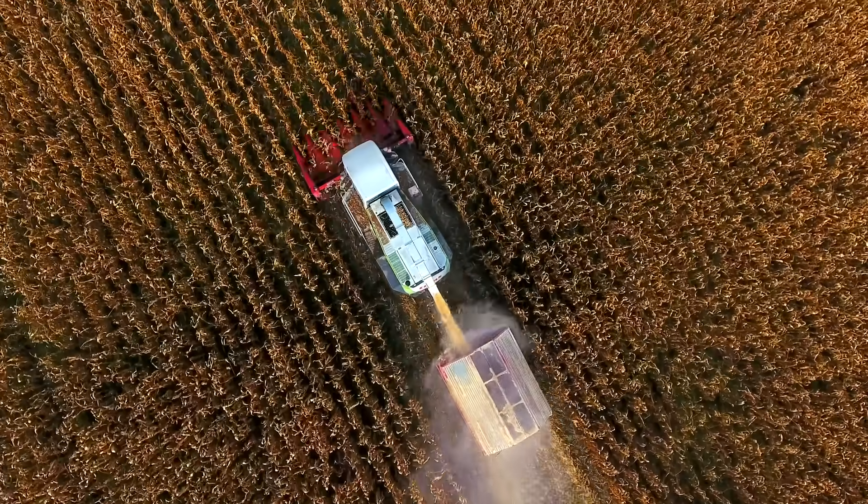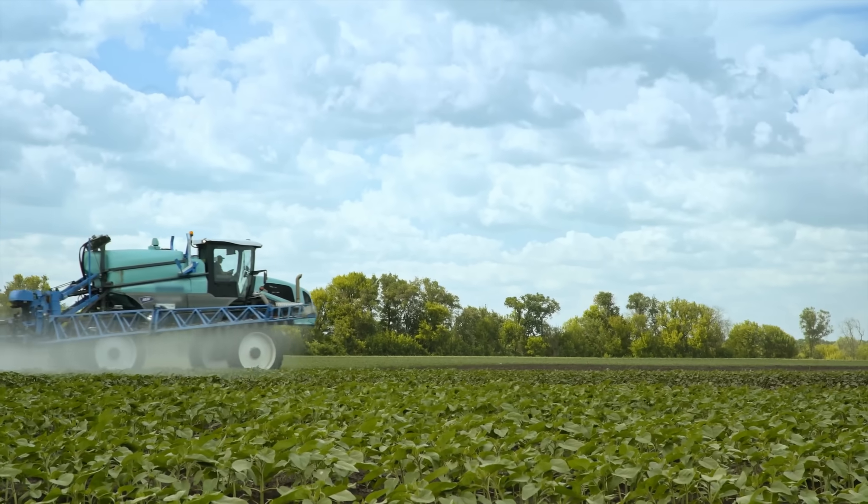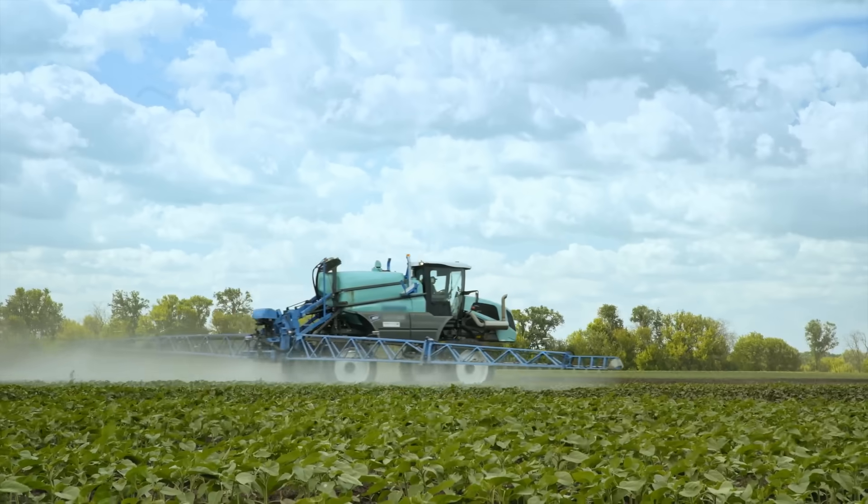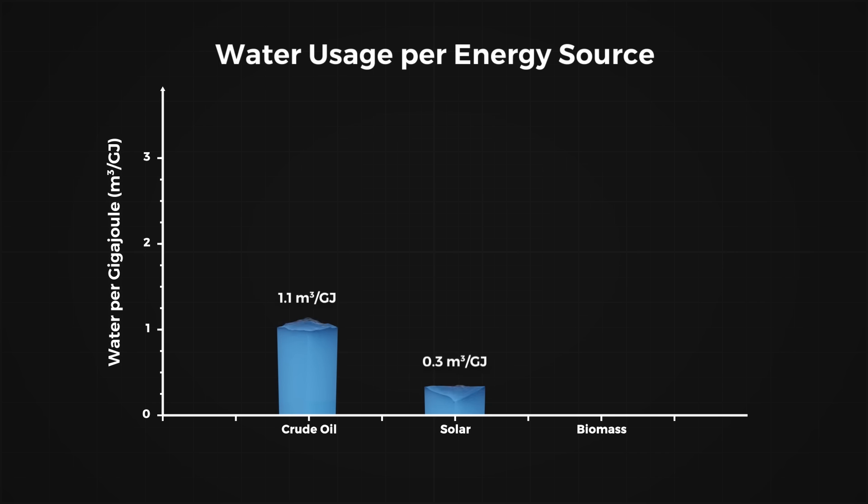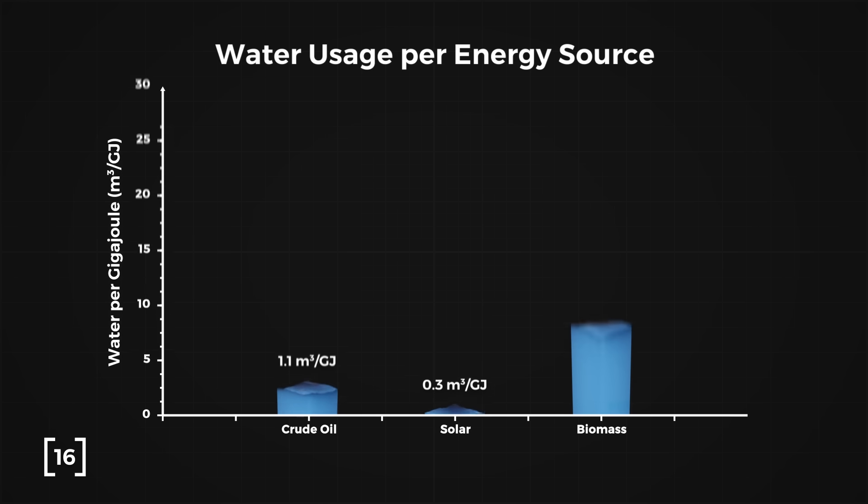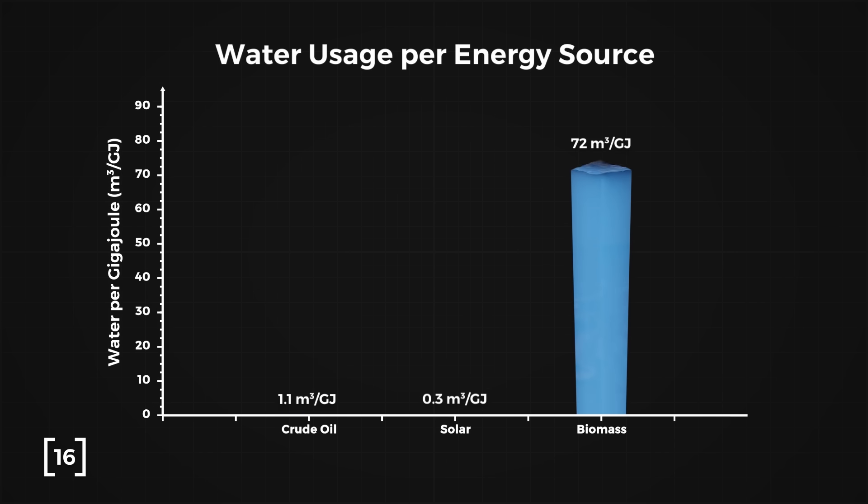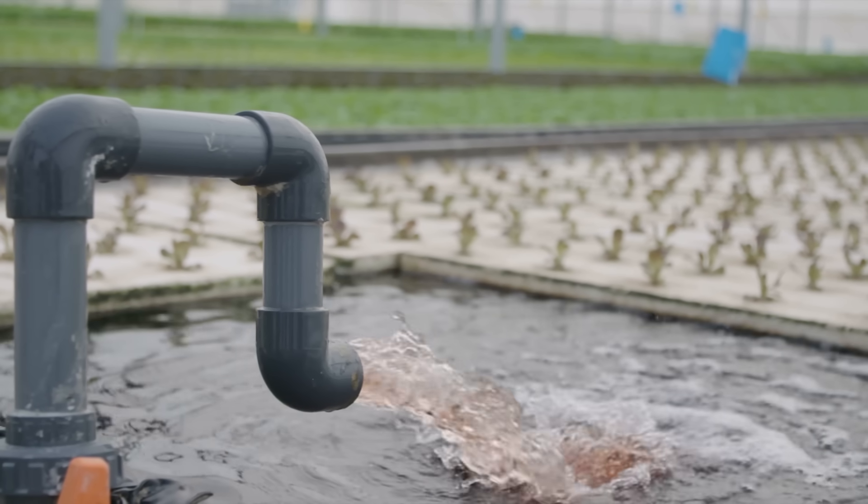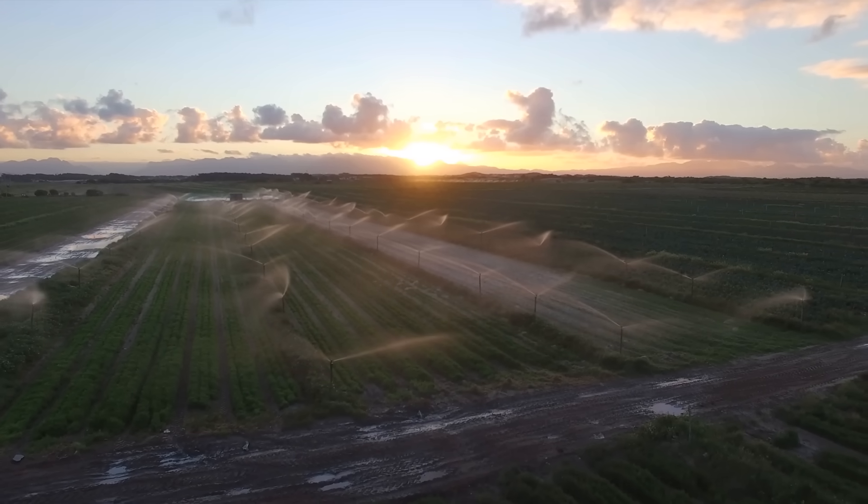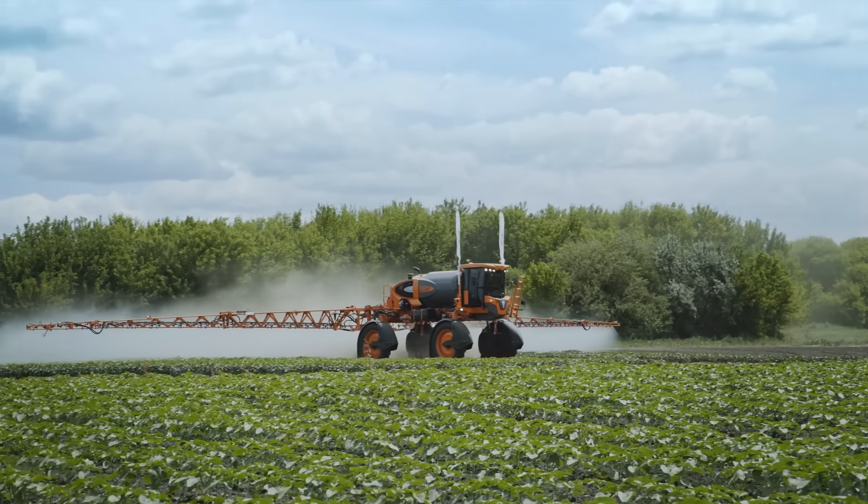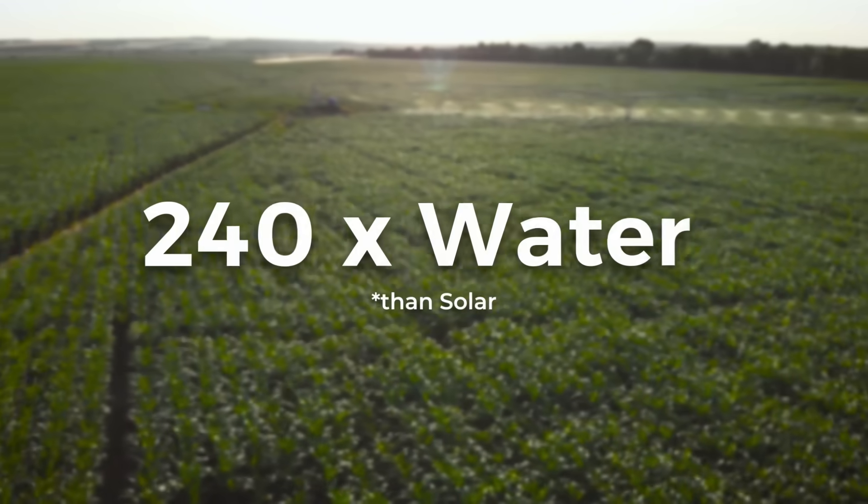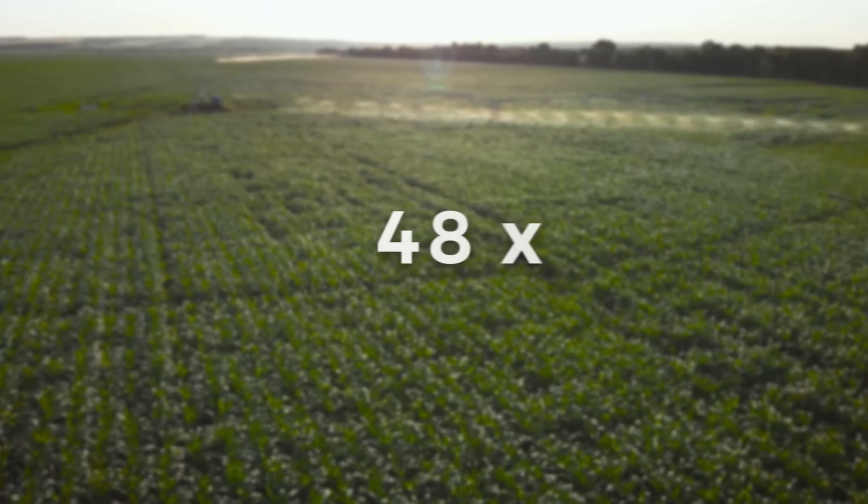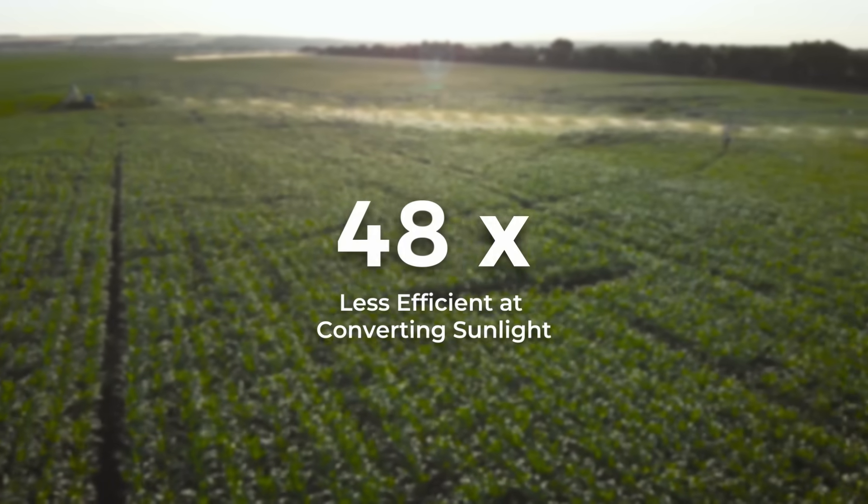It's not just wasteful in energy, it's wasteful in water, an incredibly scarce resource in this modern world. Compared to fossil fuels and renewable energy sources like solar, biomass energy uses substantially more water. On average, biomass crops have a water footprint 72 times higher than fossil fuels and 240 times more than solar. Over 80% of our freshwater usage already goes to agriculture. Increasing biomass energy crops would push this even higher, putting more strain on an already limited resource. 240 times more water than solar and 48 times less efficient at converting sunlight into energy. What's the deal here?